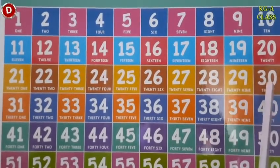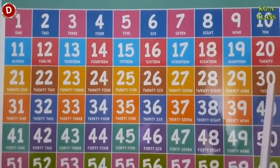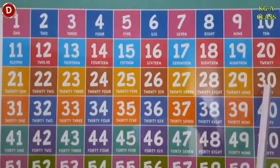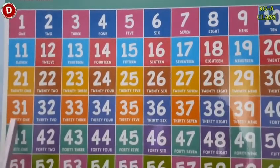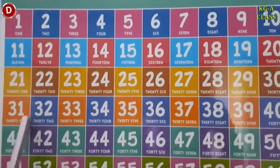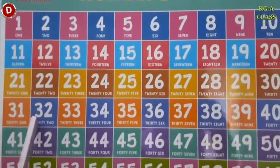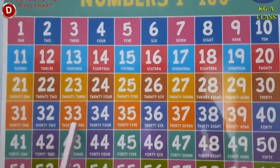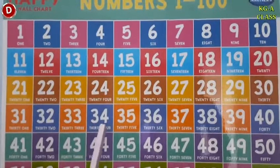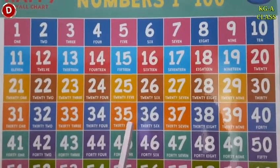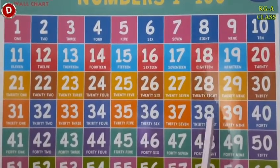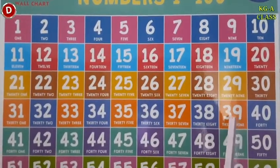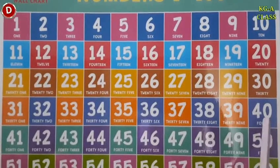After 29 comes 30. And after 30, the next number is 31. Look here: 31, 32, 33, 34, 35, 36, 37, 38, 39.